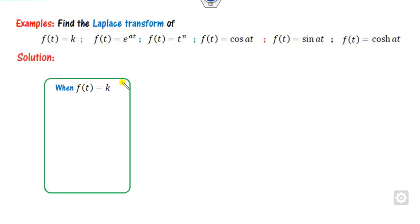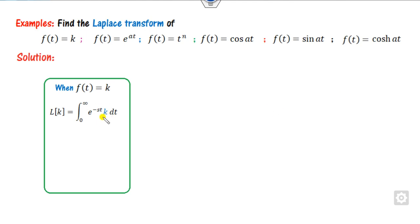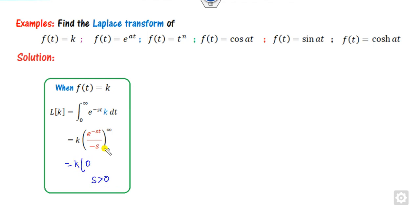Let's start with the first one. The definition of the Laplace transformation is the integral from 0 to infinity of e raised to power minus s·t times f(t) dt. We substitute f(t), bring k out as a constant, and integrate. Substituting s as infinity gives 0, and at t=0 we get 1, provided s is greater than 0. So if someone asks the Laplace transformation of 7, the answer is 7/s.